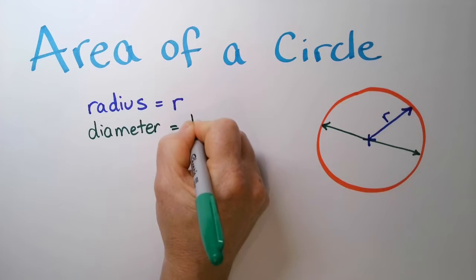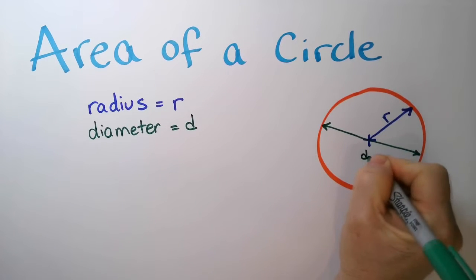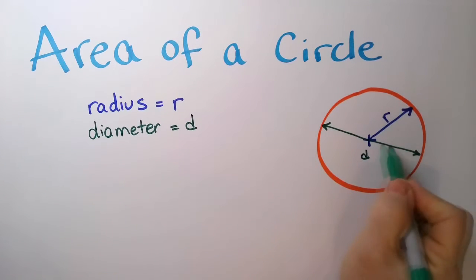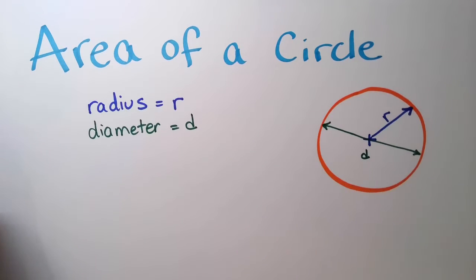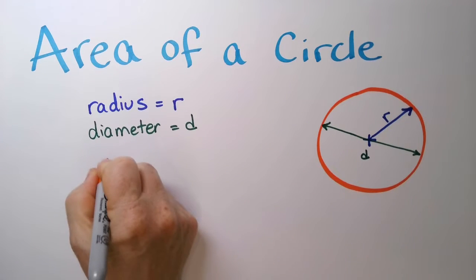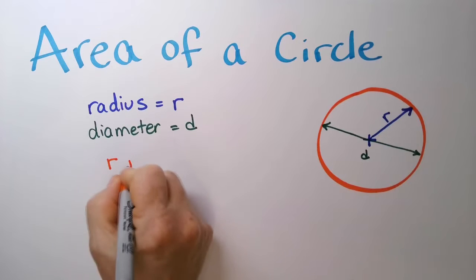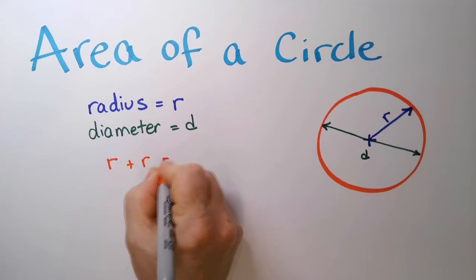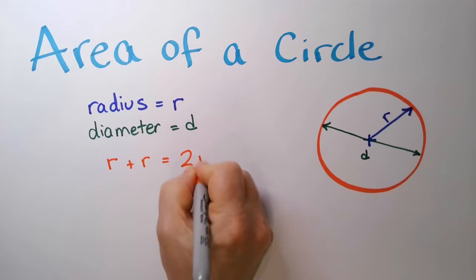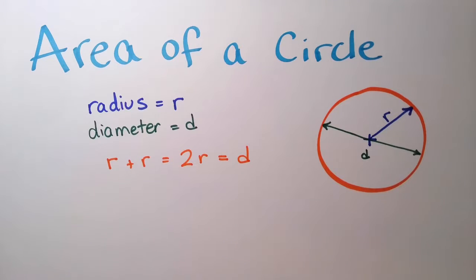The radius is represented by the letter R. And if I go instead from one side of the circle through the center to another part on the circle on the opposite side, that is called the diameter, and we call that D. Notice that this is a radius and this is a radius, so R plus R — two radii — is equal to the diameter.